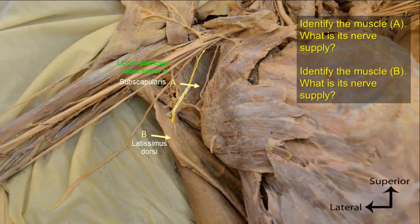The latissimus dorsi muscle is supplied by the nerve to latissimus dorsi, or thoracodorsal nerve, from the posterior cord of the brachial plexus. This nerve is flanked on either side by the upper and lower subscapular nerves that supply the subscapularis muscle.